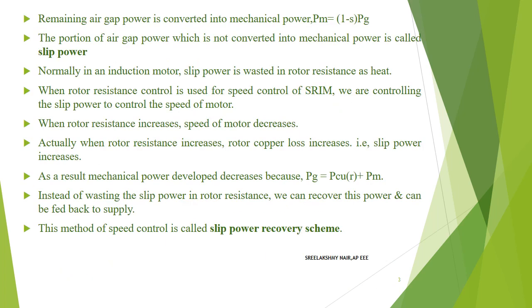The mechanical power developed is also shown in the power flow diagram. A portion of the air gap power is not converted into mechanical power. The remaining air gap power is converted into mechanical power: PM = (1 − S)·PG. The portion of the air gap power which is not converted into mechanical power is called slip power. Normally in an induction motor, slip power is wasted in rotor resistance as heat.